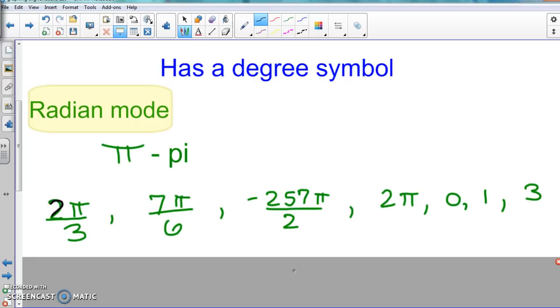This is 2π over 3, 7π over 6, negative 257π over 2, 2π, 0, 1, and 3.